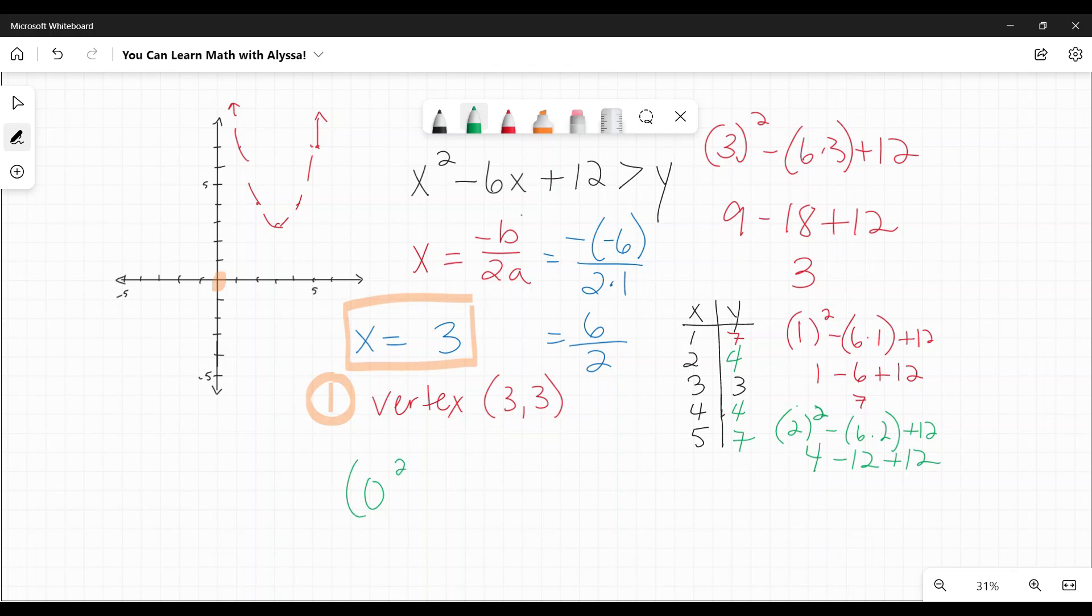So 0 squared minus 6 times 0 plus 12. As you can see, plugging in 0 for x just gets rid of those x's. So I am left with 12 since 0 minus 6 times 0, 0, plus 12 is 12. Is 12 greater than, and I apologize, I did not write 0 in for y, sorry about that. Is 12 greater than 0? Because I plugged in x and y of 0, 0. Yes, this is a true statement. 12 is greater than 0.